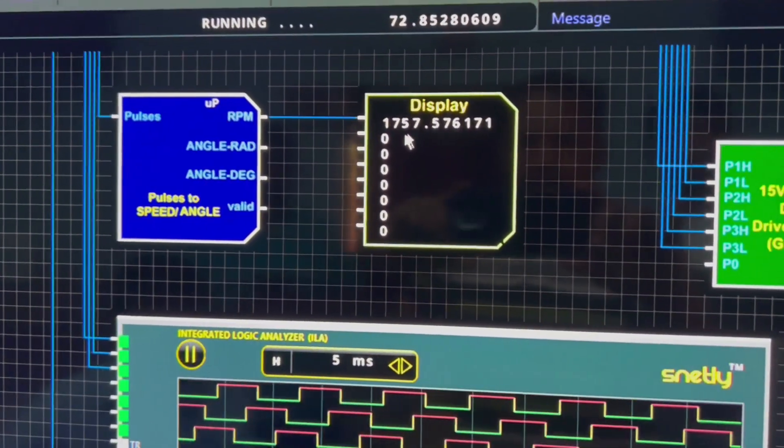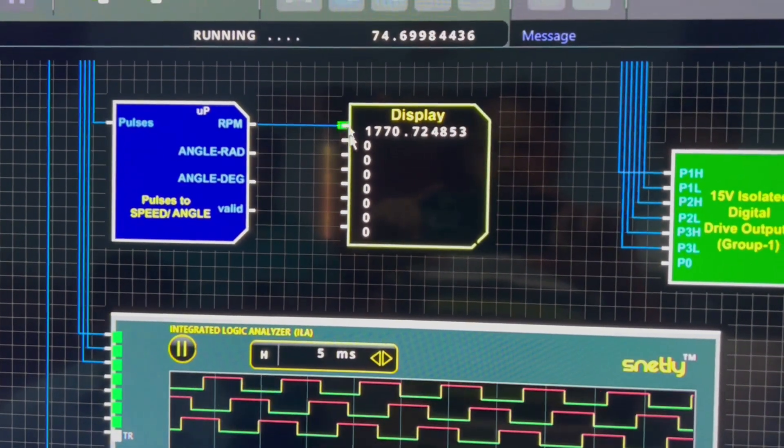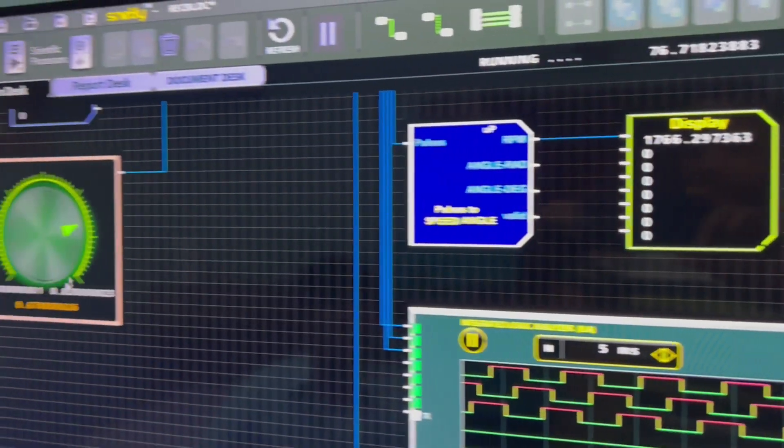Here you can observe the motor speed in RPM, 1070. Since it is open-loop control, by simply varying the duty control, the speed will be varying.